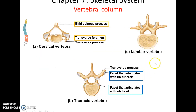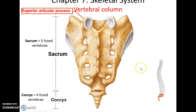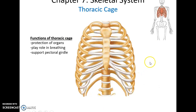The sacrum is a fusion of about five vertebrae. It has a superior articulating process that articulates with the last lumbar vertebra. Below it is the coccyx, or tailbone, a fusion of four vertebrae.